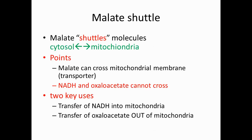Now we have to know what the malate shuttle is. The malate shuttle is the transportation of the malate molecule from the cytosol into the mitochondria and back. Malate can cross the mitochondrial membrane with a special transporter, but NADH and oxaloacetate cannot. There are two key uses: transfer of NADH into the mitochondria, and transfer of oxaloacetate out of the mitochondria.